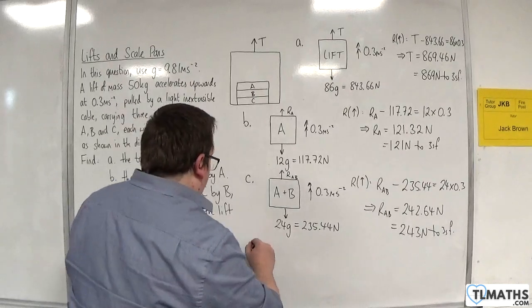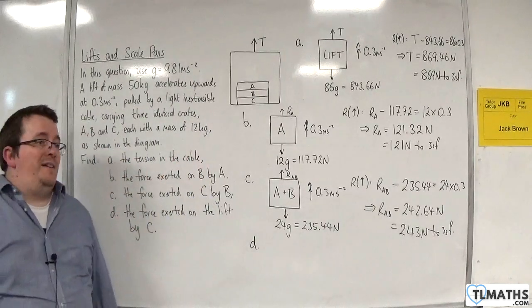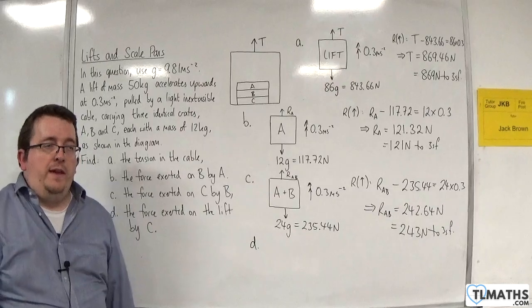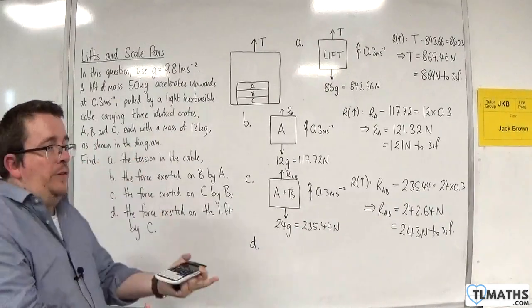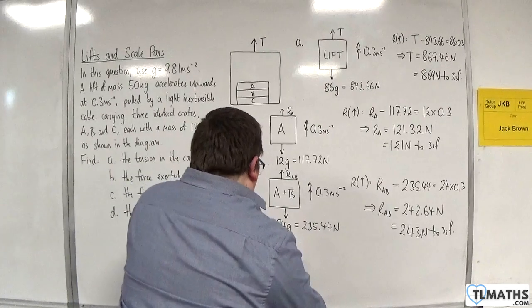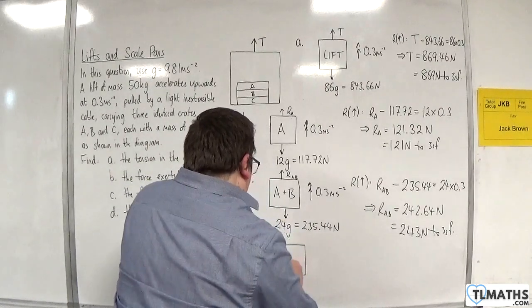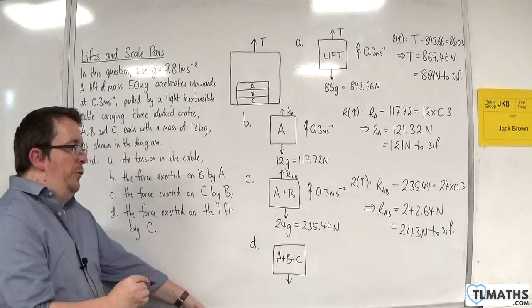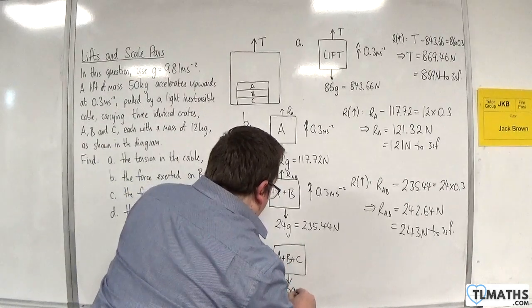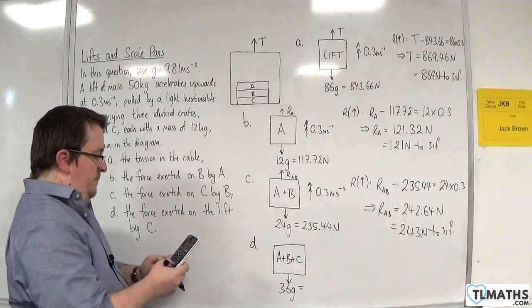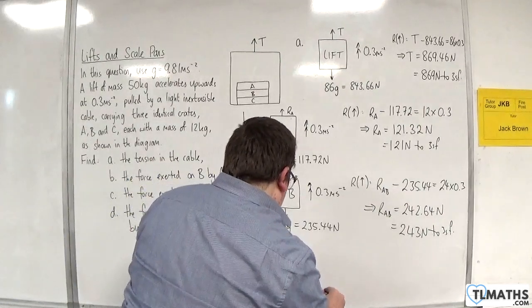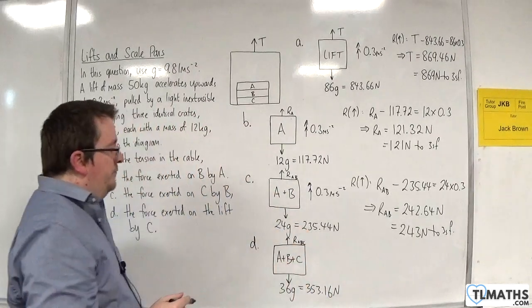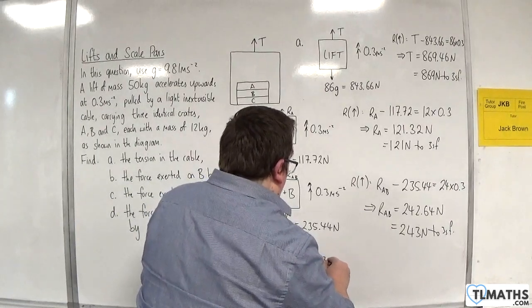So part D: find the force exerted on the lift by C. Now, again, just like we did here, we had both A and B pushing down on C. Now we've got all three, A, B, and C, all pushing down on the lift. So we're going to treat it like one particle: A plus B plus C. So there's going to be a weight working vertically downwards, which is going to be 36g. So 36 times 9.81 is 353.16 newtons. And there's going to be a normal reaction force. I'm going to call it RABC. And we're accelerating upwards at 0.3 metres per second per second.